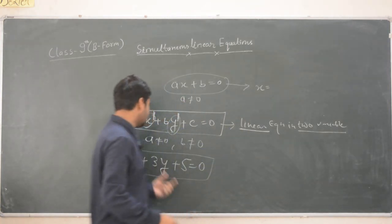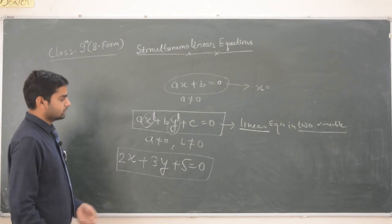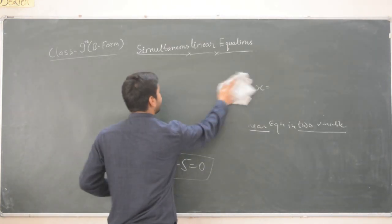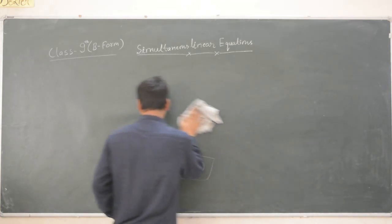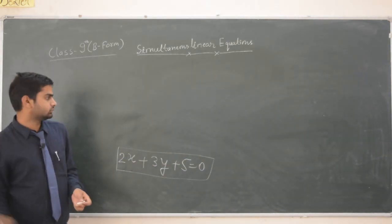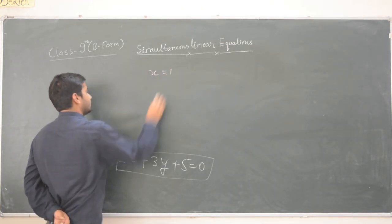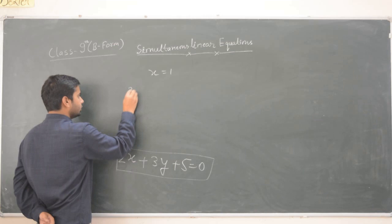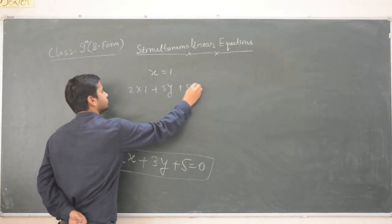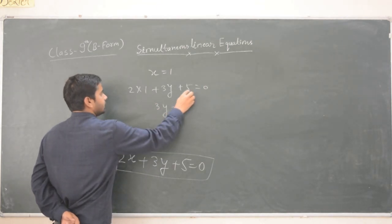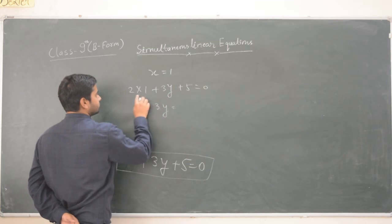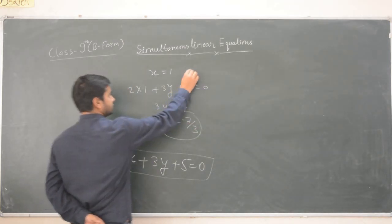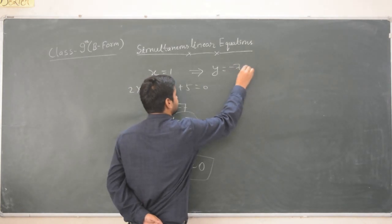A single linear equation in one variable always gives a unique solution, but a single linear equation in two variables gives infinite solutions — an infinite number of solutions. Let's see how many values of x and y will satisfy this equation. If we take x equal to 1, putting x equal to 1 we get 2 times 1 plus 3y plus 5 equal to 0, so 3y equals minus 7, and y equals minus 7 by 3.